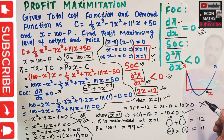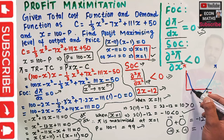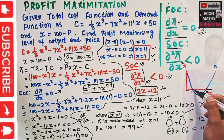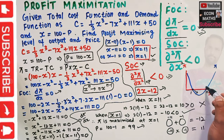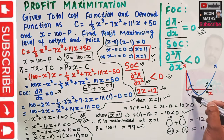The second order condition requires that the slope of the marginal profit function is decreasing — that is, the second derivative is less than zero — at the critical point. At X = 1 the marginal profit is decreasing, so this is our profit maximizing output. At X = 11 it is increasing, so that cannot be the profit maximizing level of output.